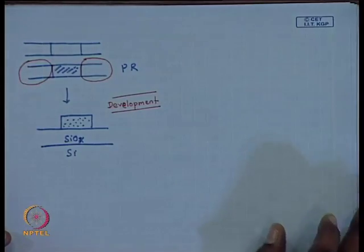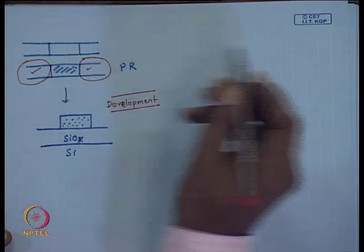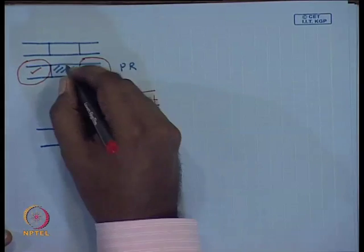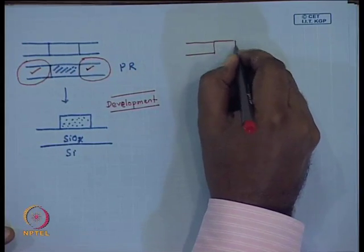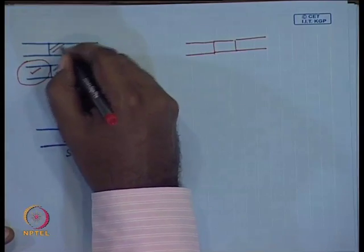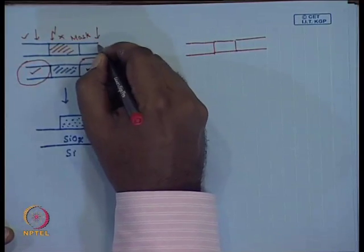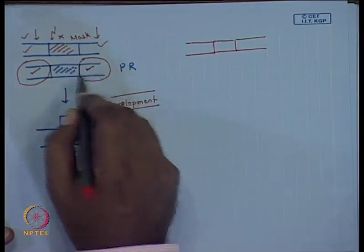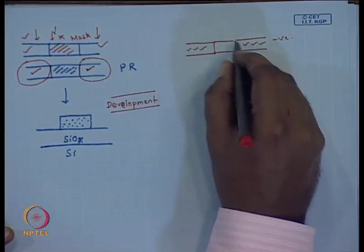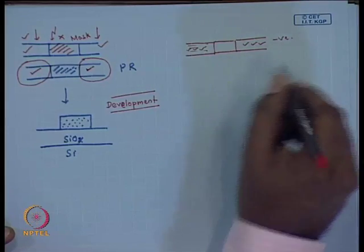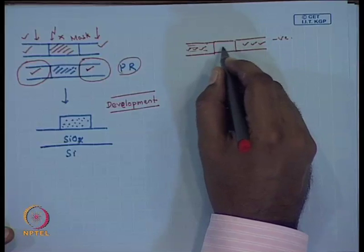The essential idea is that you use a chemical solution or solvent in which the unexposed or exposed parts will dissolve, but the cross-linked part will not dissolve. Depending on the tone of the photoresist, it can be the opposite. For a positive resist, the UV-exposed or degraded parts dissolve away; for a negative resist, you dissolve away the unexposed part.